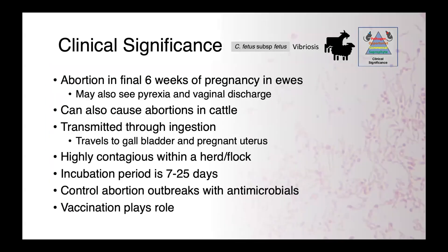C. fetus subspecies fetus is primarily associated with small ruminants and causes abortion in the final six weeks of pregnancy. In these animals, you may see pyrexia and vaginal discharge. It can also cause abortions in cattle. However, the mode of transmission is different from C. fetus venerealis — it's thought to be transmitted through ingestion. It travels through the portal vasculature to the gallbladder and ultimately makes its way to the pregnant uterus. Within a flock or herd, this is highly contagious, with an incubation period of approximately one to three and a half weeks.